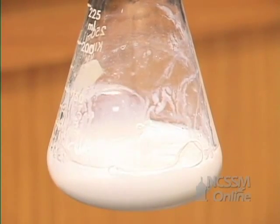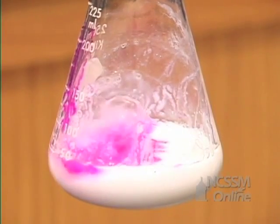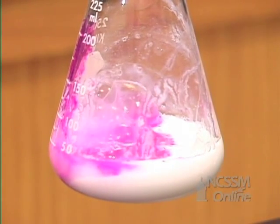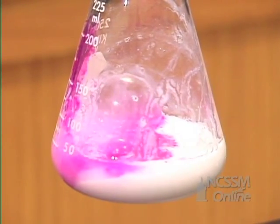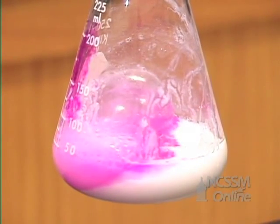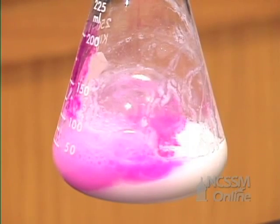We can test for the fact that calcium hydroxide is produced by adding phenolphthalein. The phenolphthalein is colorless in acid solution and pink in basic solution. The fact that the phenolphthalein turns pink tells us that we have produced the metal hydroxide.